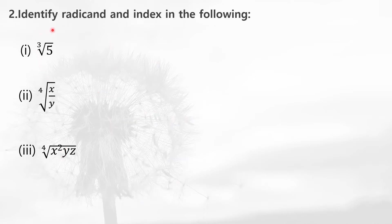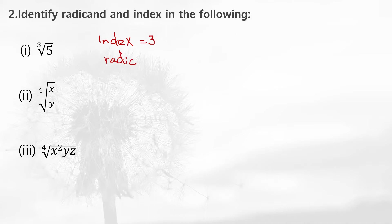Now coming to the second question: identify the radicand and index in the following. The number under the root sign we call the radicand, and the small number indicating the type of root we call the index. In this case, the index is 3 and the radicand is 5.